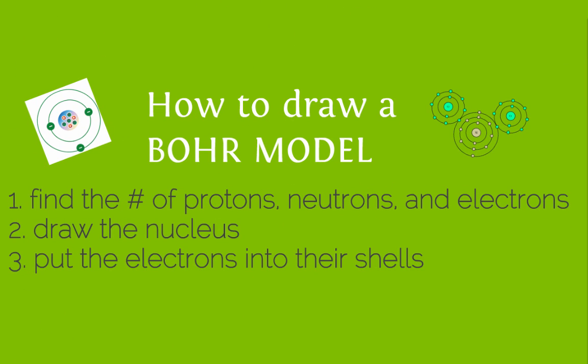So let's talk about how to draw a Bohr model. To start, you need to find the number of protons, neutrons, and electrons, which you can do from the periodic table. Then you'll draw the nucleus. And the last step is to put the electrons into the correct shells.